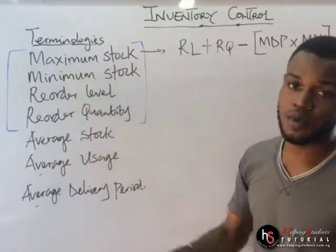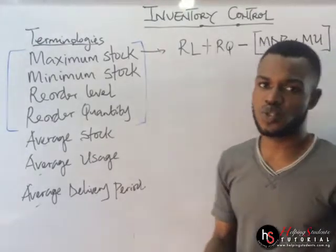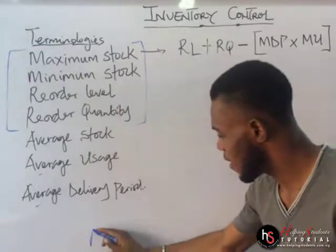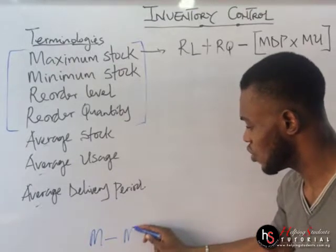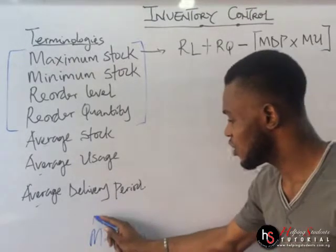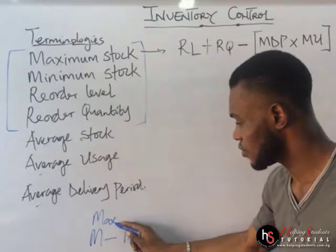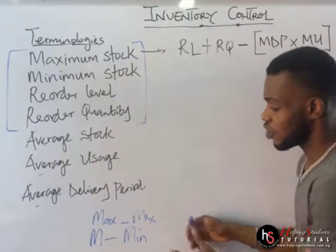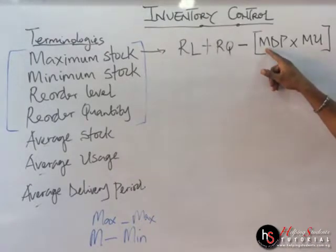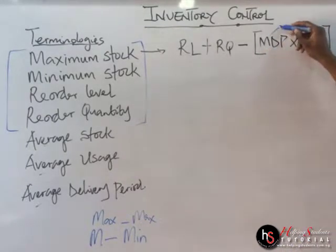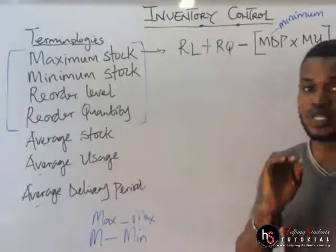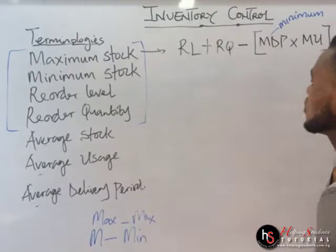Since we have both maximum and minimum in the formulas, I want to differentiate between them. Each time you see 'M' I am referring to minimum, and each time you see 'Max' I am referring to maximum. Take good note of that as we proceed.